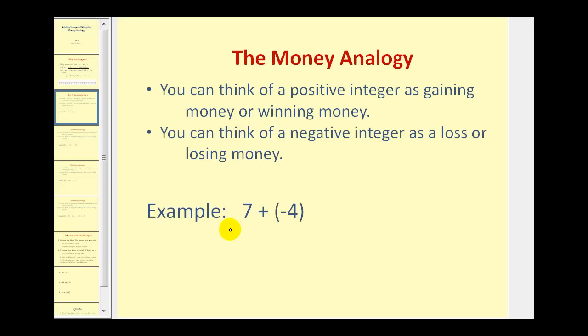So for example if we have 7 plus negative 4, because this 7 is positive you can think that you win 7 dollars and then when you add negative 4 you can think of this as a loss of 4 dollars. So if you win 7 dollars and then you lose 4 dollars you would still be ahead 3 dollars. Therefore 7 plus negative 4 is equal to positive 3.